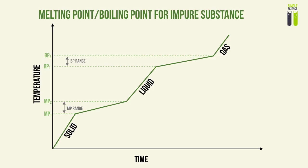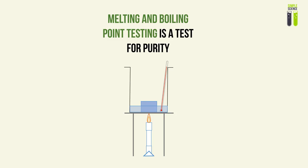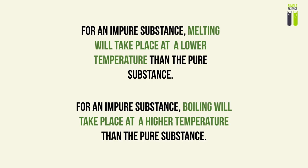For an impure substance, there will be a range over which the melting point exists and a range over which the boiling point exists. The equilibrium state between solid and liquid — the melting point — and the boiling point will each span a range rather than a single fixed temperature. We can therefore use melting and boiling point testing as a test for purity: a pure substance melts and boils at one specific temperature, while an impure substance shows a range for both.